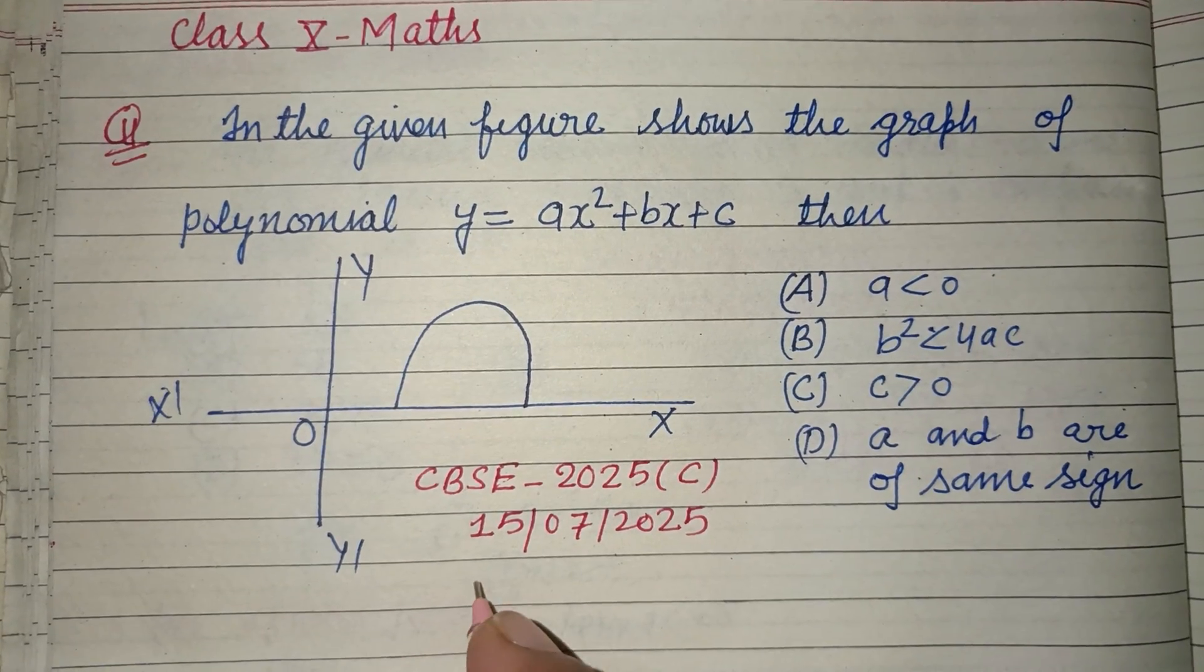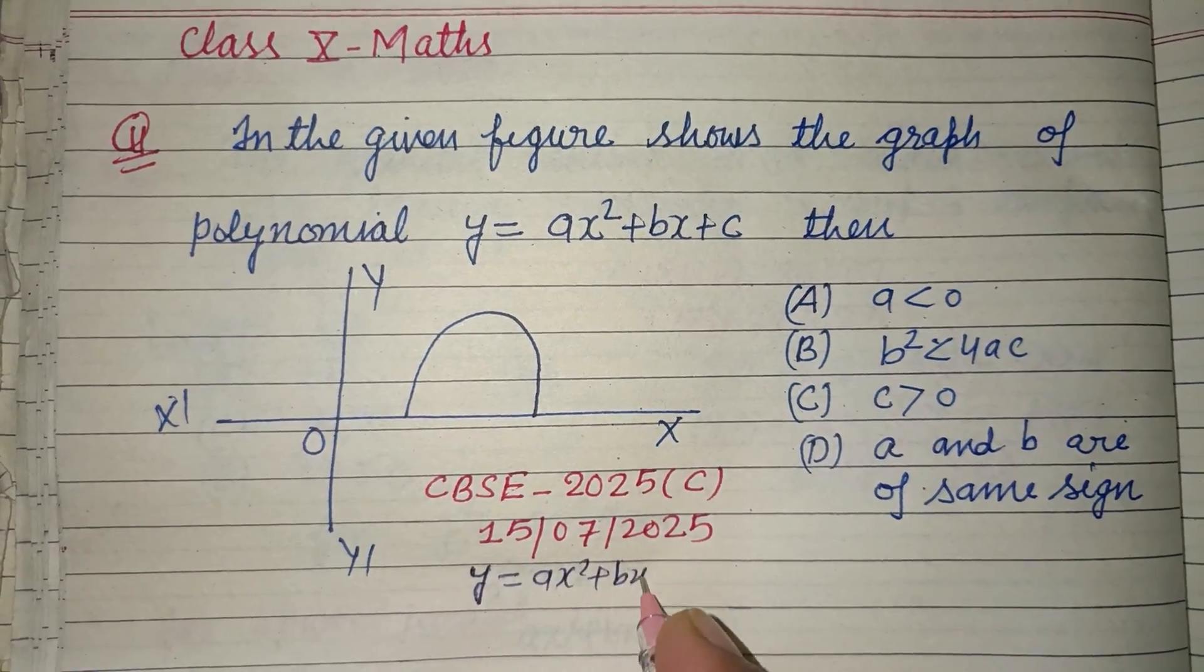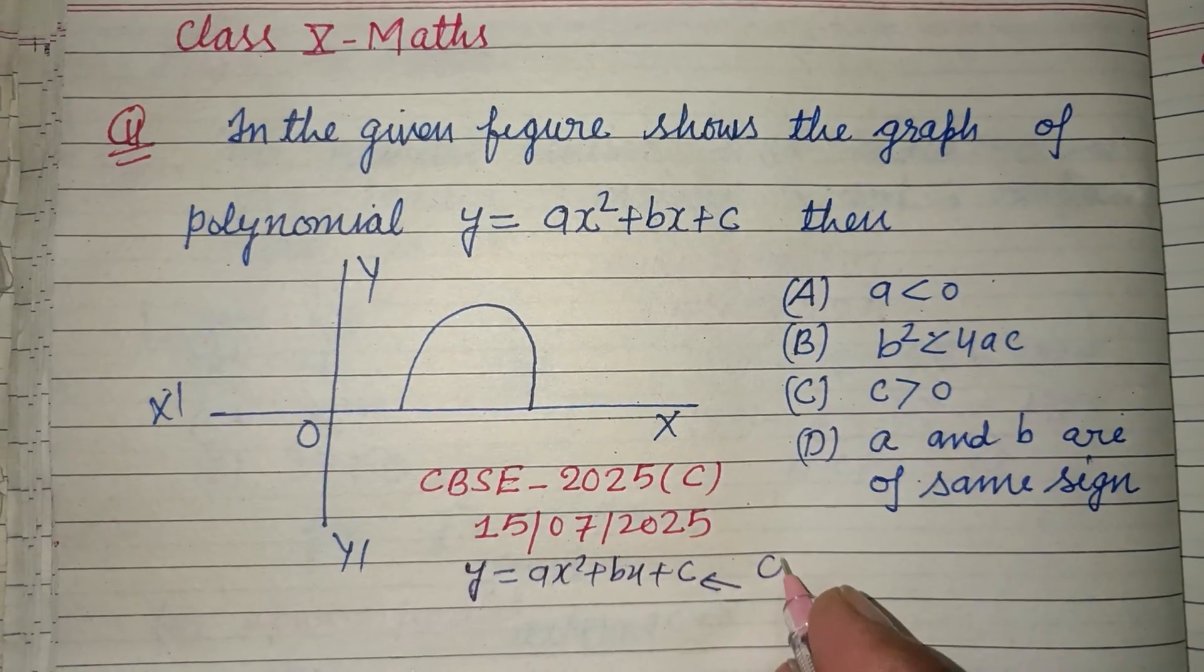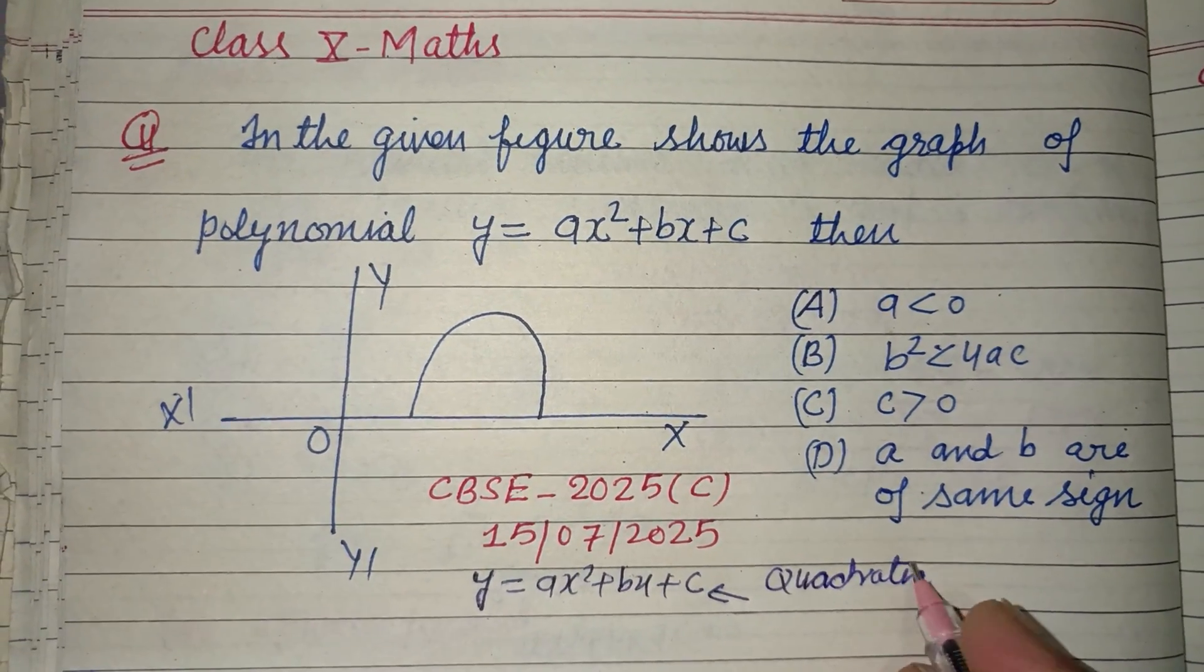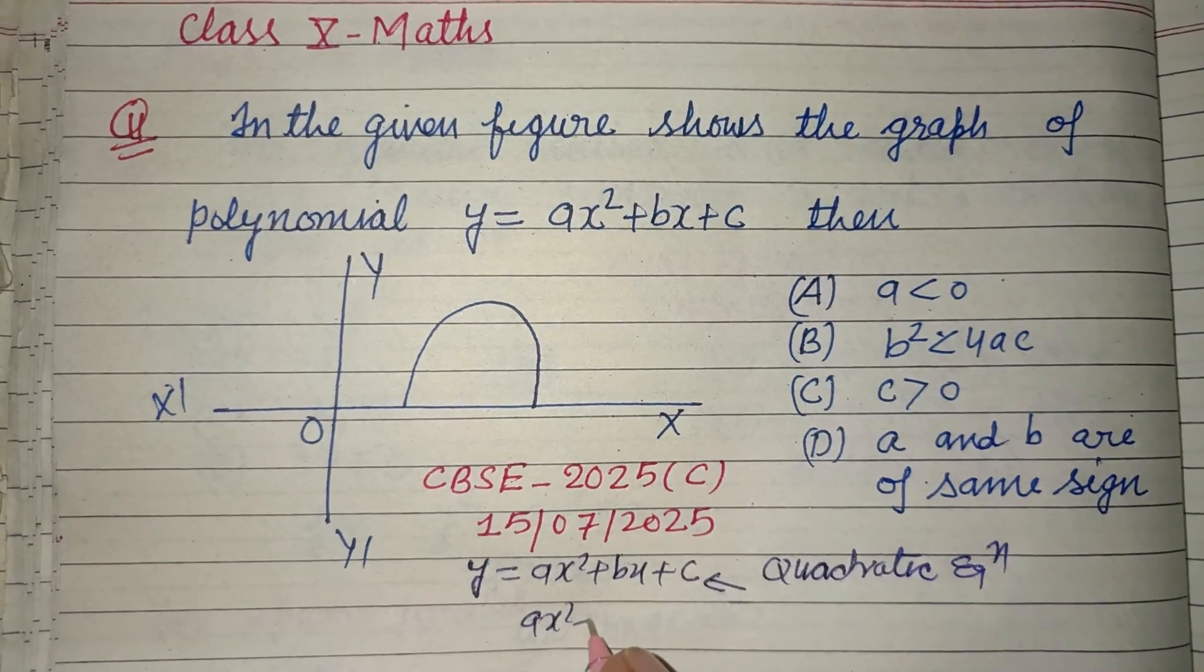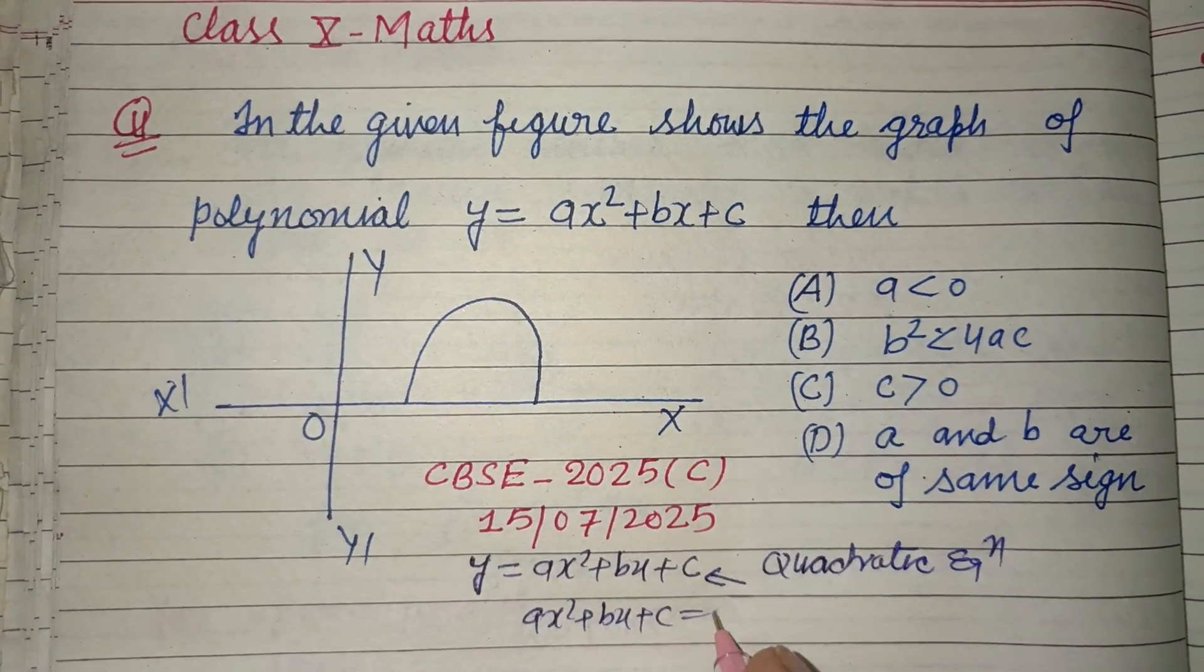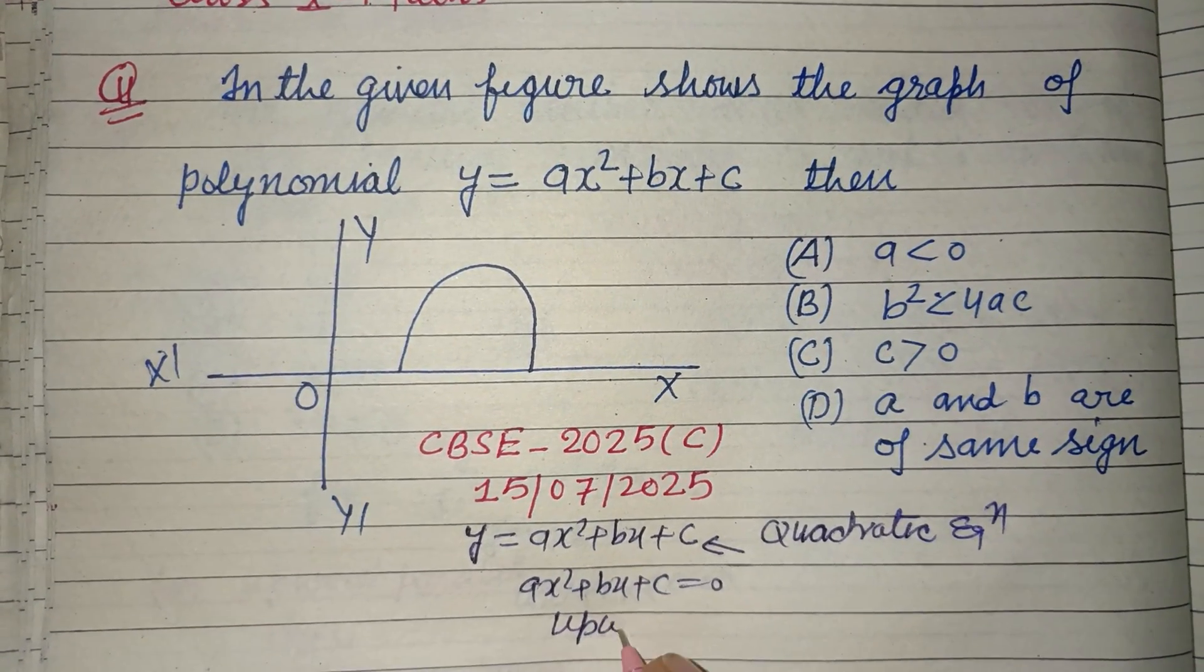So students, this is a parabola. You know that y = ax² + bx + c, this is a quadratic equation. And ax² + bx + c, when we put equal to 0, it gives an upward parabola